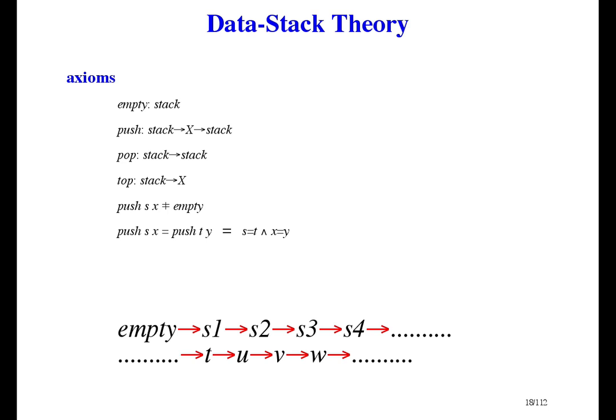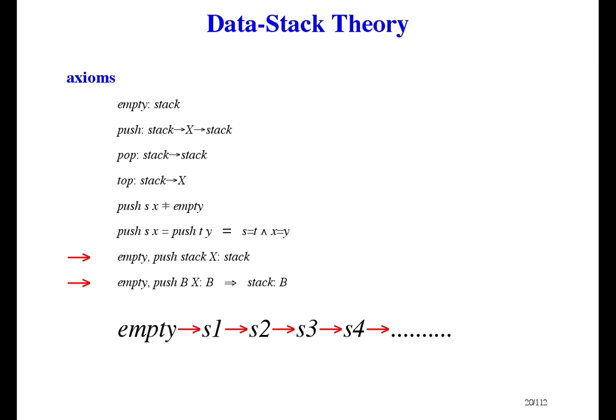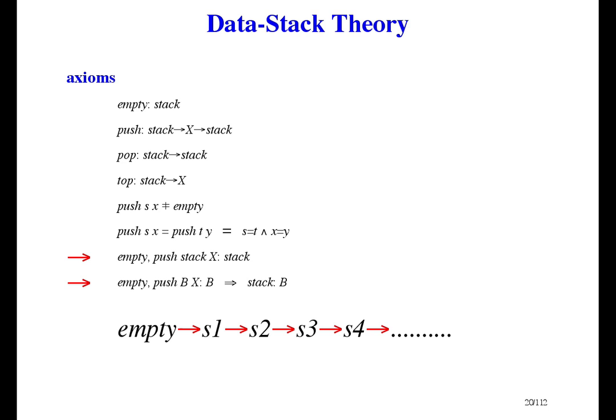It's induction — it says there are no other stacks except those you get from construction. So let's rewrite the first two axioms as a single axiom, and then we can see what induction is. It says, of all bunches satisfying construction, stack is the smallest. An alternative way of writing it is in predicate form: if you prove P about empty, and if assuming P of S allows you to prove P of the result of pushing something onto S, then you have proven P of all stacks.